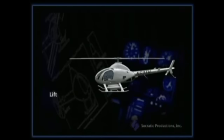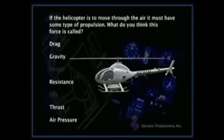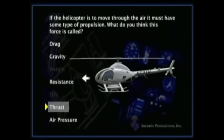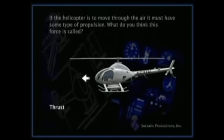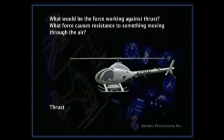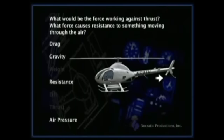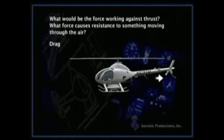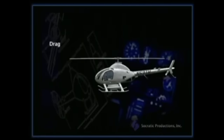If the helicopter is to fly, its weight has to be lifted off the ground. If the helicopter is to move through the air, it must have some type of propulsion. The force that moves the helicopter through the air is thrust. And what would be the force working against thrust? What force causes resistance to something moving through the air? In an aircraft, anything that resists movement is called drag.